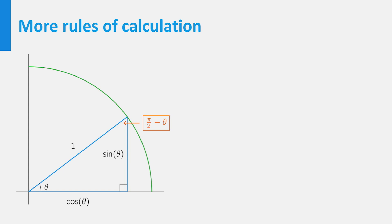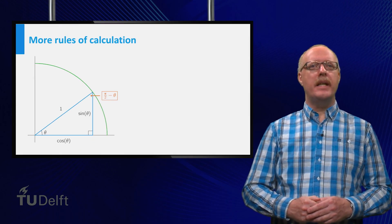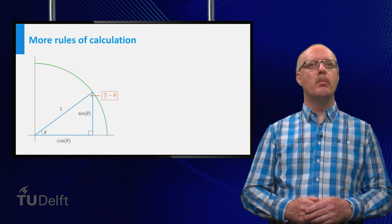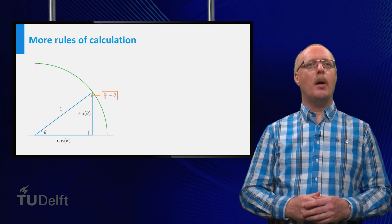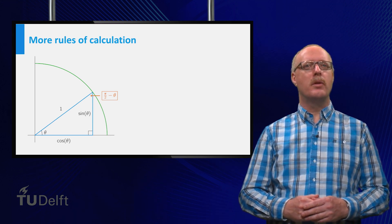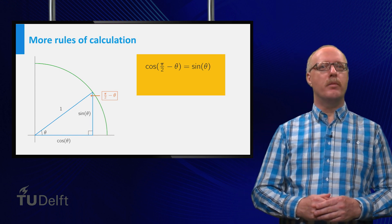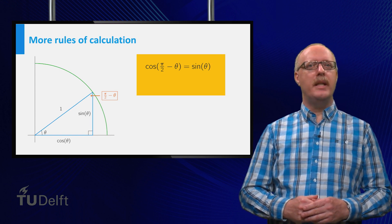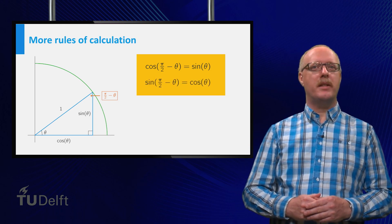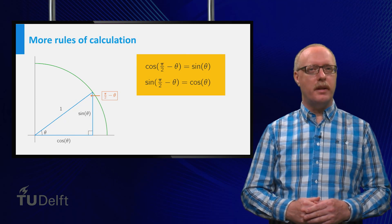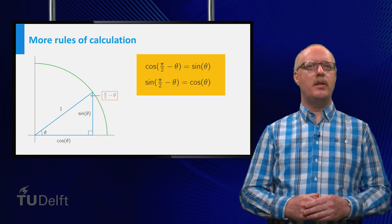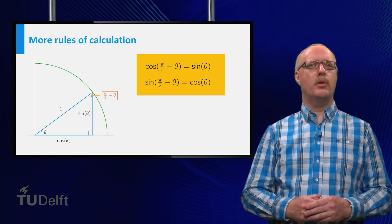Back to the rectangular triangle. Consider the indicated angle in the top corner, which equals pi over 2 minus theta. For this angle, the opposite side and the adjacent side of the rectangle are reversed, which shows that the cosine of pi over 2 minus theta equals the sine of theta, and that the sine of pi over 2 minus theta equals the cosine of theta. The periodicity of both functions shows that these formulas hold for all values of theta.